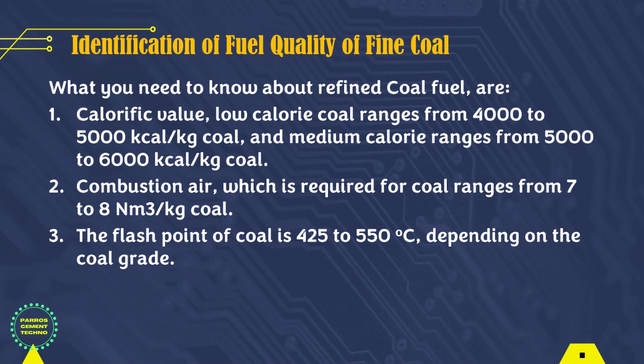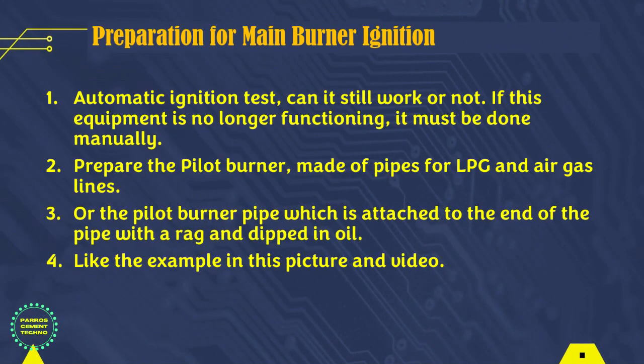This is very important to note: when starting to use coal fuel, it must be adjusted to the temperature in the combustion chamber so that it can produce an optimal combustion process temperature and not leave much CO. Next, preparation of equipment for main burner ignition.